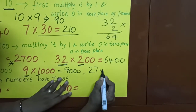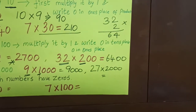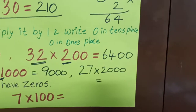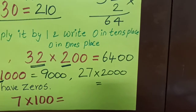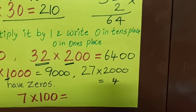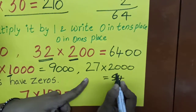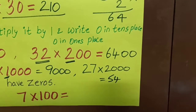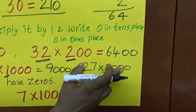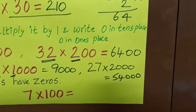One more question: 27 into 2000. What is the step? First, I have to multiply 27 into 2. 7 twos are 14, remainder 1. 2 twos are 4, plus 1 is 5. I got 54. Next, count the zeros: 1, 2, 3 — three zeros. So I have to add the 3 zeros. That's all.